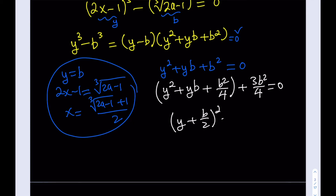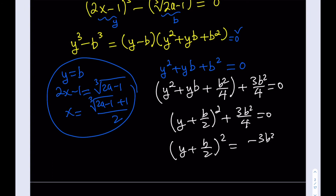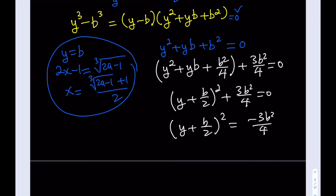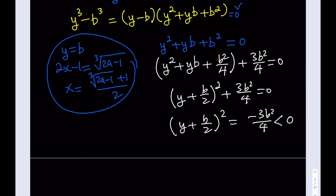Isolating (y + b/2)² gives negative 3b²/4. Can b equal 0? No — if b is not 0, this expression is always going to be less than 0. The square of something is negative — no real square is negative — which means you do not get real solutions from here. The other solutions will be complex.